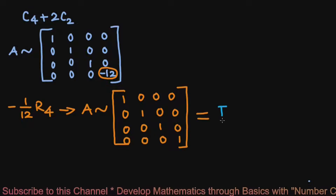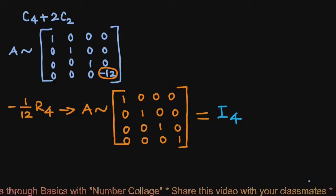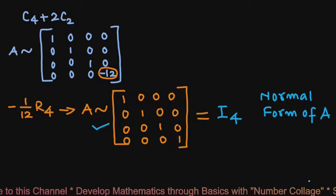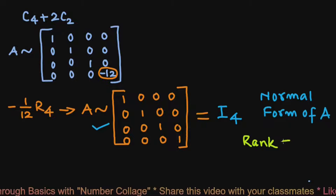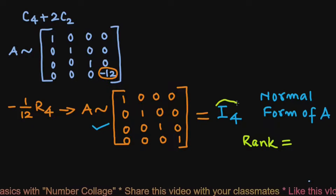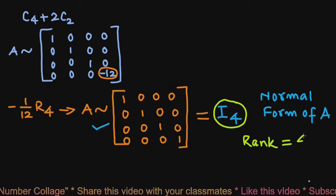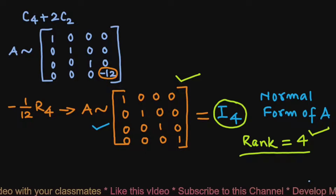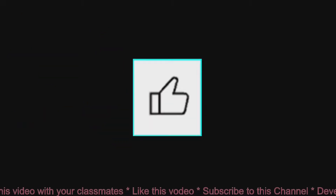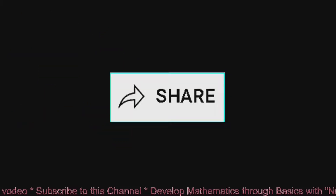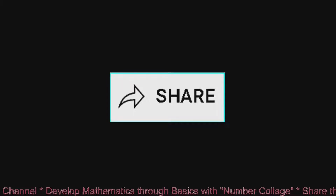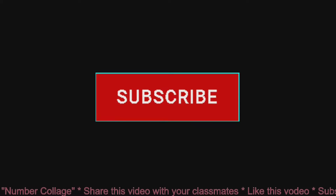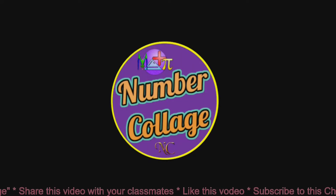This gives a unit matrix of order 4, and hence this is the normal form of A. Its rank is the same as the rank of this unit matrix, which is 4. So we obtained the normal form and rank 4. If you like this video, please share it with your classmates. Don't forget to subscribe to this channel. See you in the next video — until then, keep watching NumberCollage. Thank you.